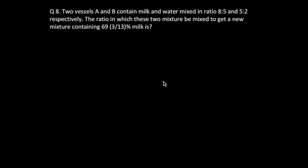Okay, so in question number eight we are given two vessels A and B and they contain milk and water. They are mixed in the ratio 8:5 and 5:2. So vessel A is there, vessel B is there, milk is there and water is there. In A, 8:5 is the ratio, and in B, 5:2.